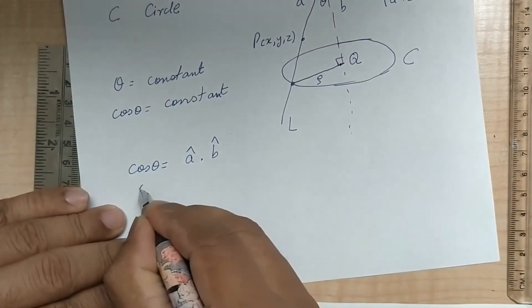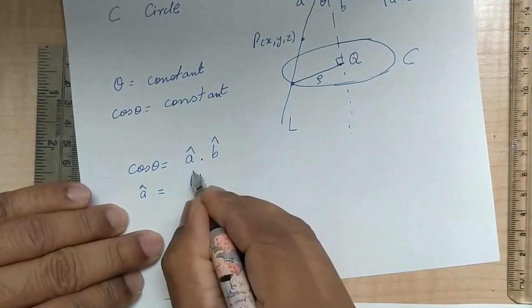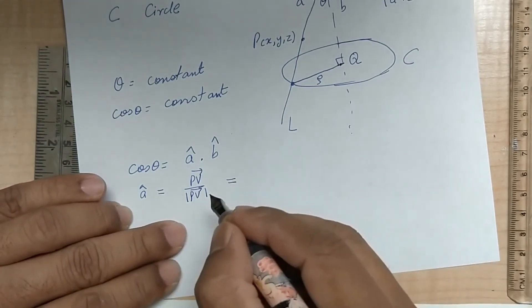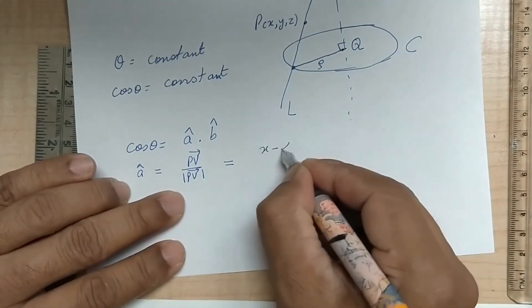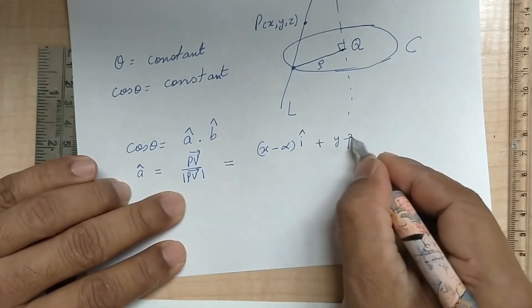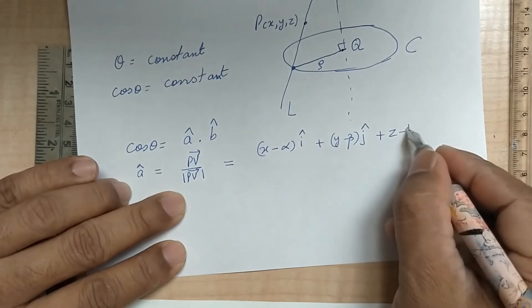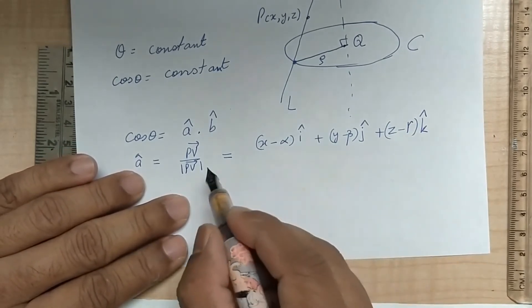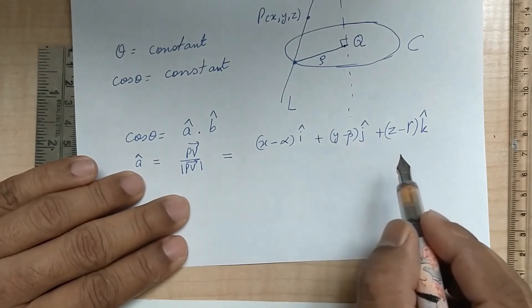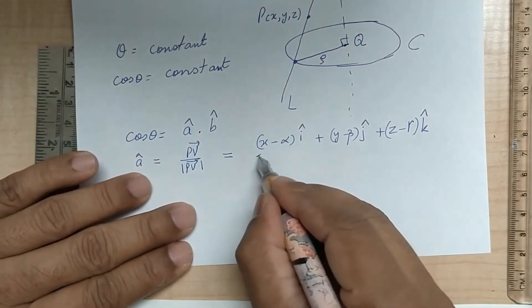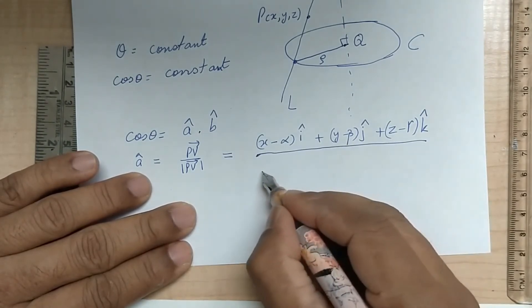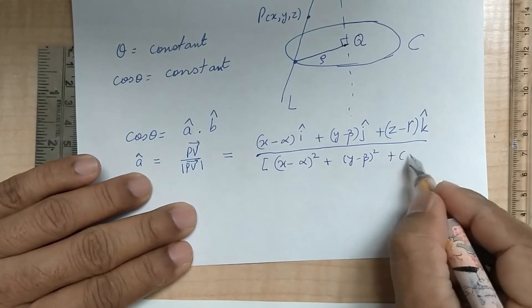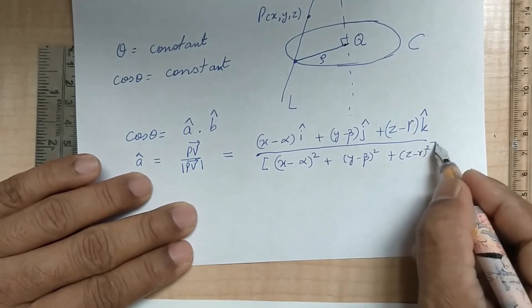Now, a-hat, a unit vector in this direction, is the vector PV divided by the magnitude of PV. I can write the vector PV as (x minus alpha) i + (y minus beta) j + (z minus gamma) k. So the direction ratios of PV are (x minus alpha, y minus beta, z minus gamma), and dividing by the magnitude gives the unit vector, with magnitude equal to [(x−alpha)² + (y−beta)² + (z−gamma)²]^(1/2).